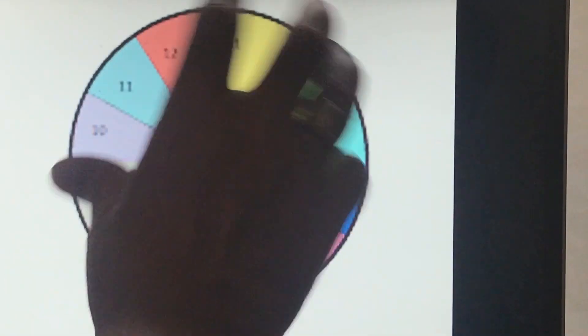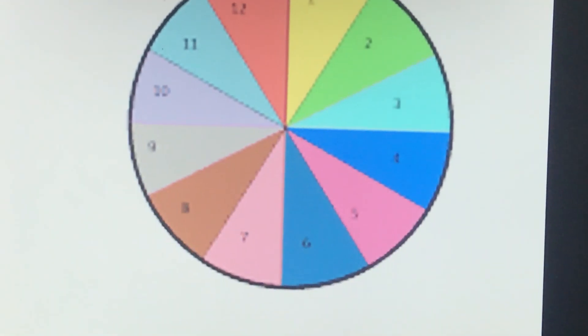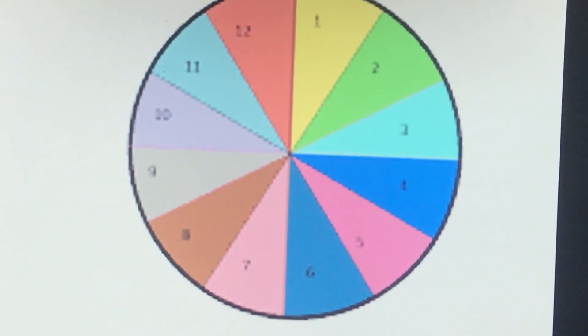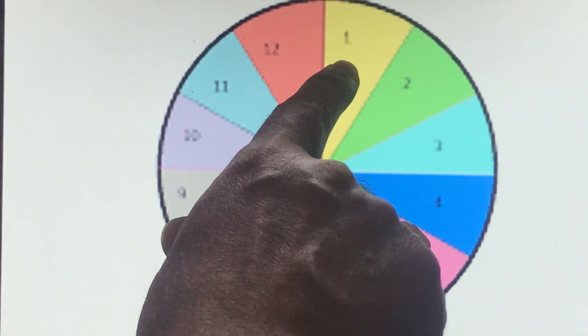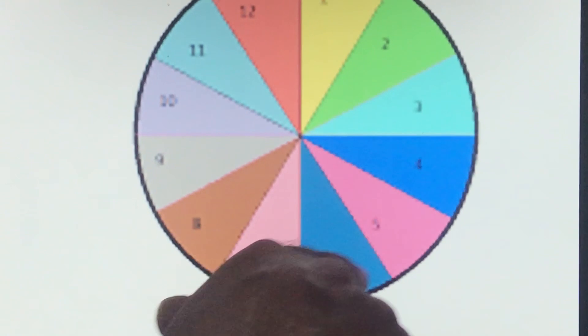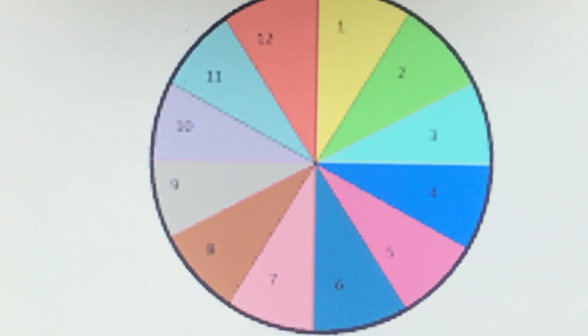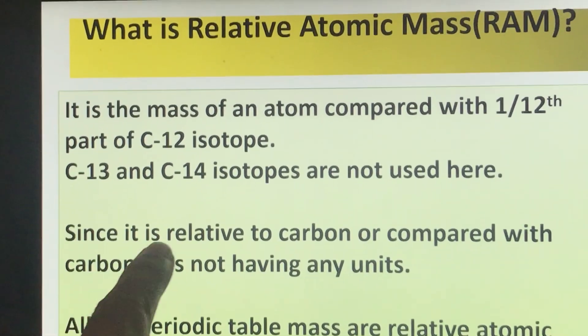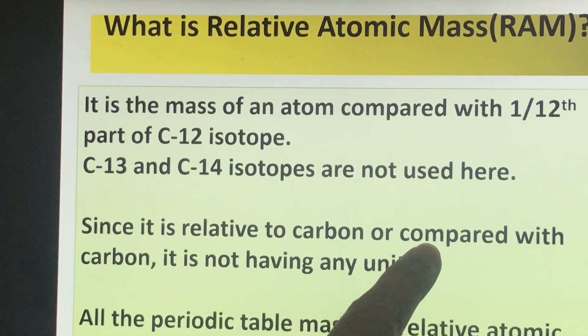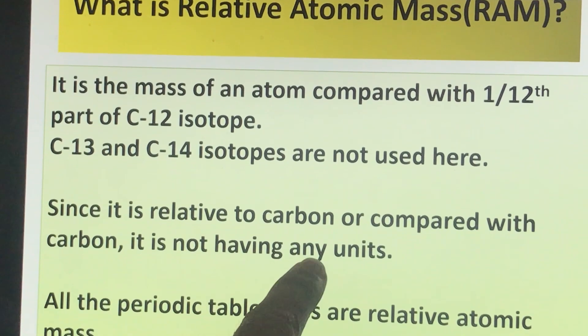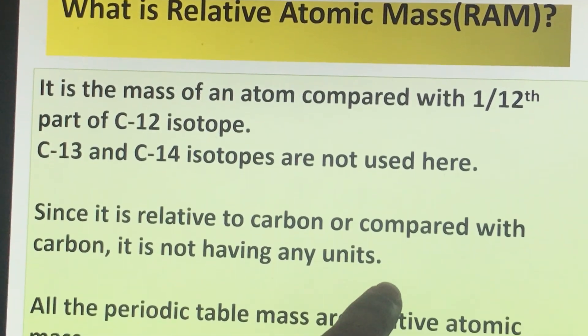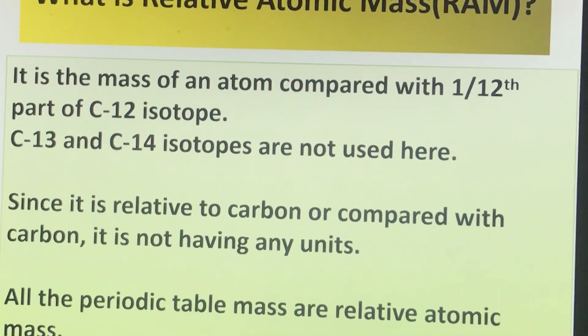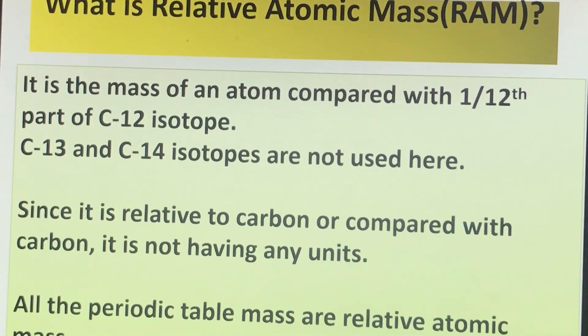When we compare this whole carbon-12 atom, we find that there are 12 hydrogen atoms by mass with this carbon-12 isotope. Since it is relative to carbon or compared with carbon, it is not having any units. It's unitless because comparison does not need any unit.